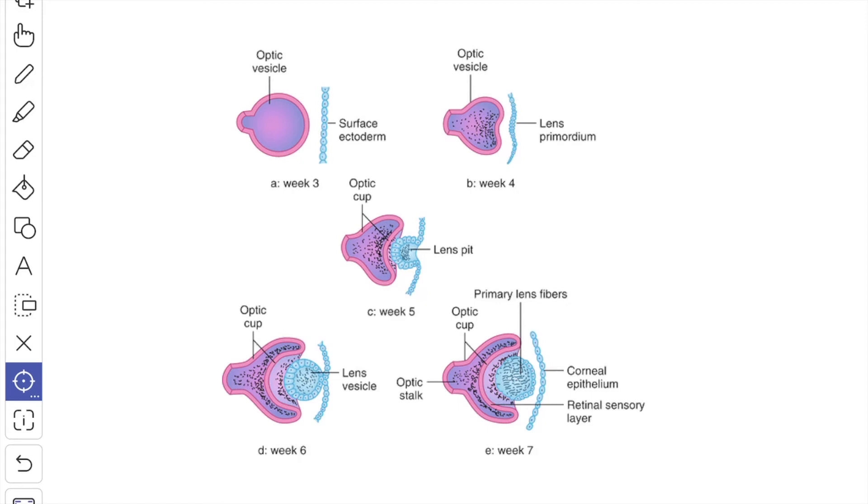Now, we will see about the arrangement of the lens fibers. The lens is developed from the lens vesicle during the sixth week of embryonic life by invagination of the surface ectoderm. Thereafter, the vesicle recedes from the surface and lies within the concavity of the optic cup. The anterior wall of the vesicle consists of a single layer of cuboidal epithelium.